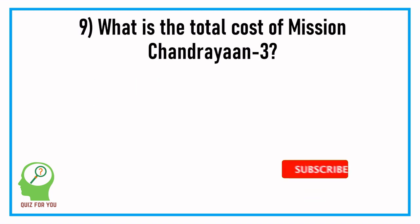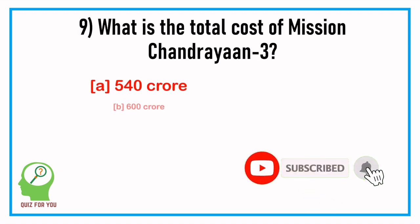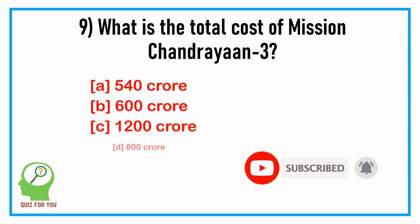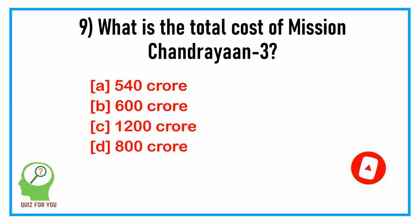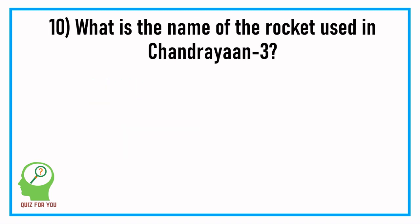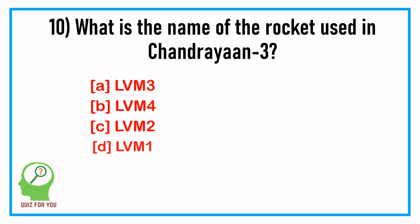Question number nine: what is the total cost of mission Chandrayaan-3? Answer: 600 crore. Question number ten: what is the name of the rocket used in Chandrayaan-3? Answer: LVM3.